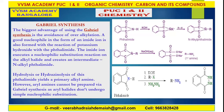In Gabriel phthalimide synthesis, phthalimide reacts with potassium hydroxide to give a potassium intermediate compound, which is then treated with an alkyl halide to form N-alkyl phthalimide. The product is further treated with aqueous sodium hydroxide, giving the sodium salt of phthalic acid and yielding a primary amine.